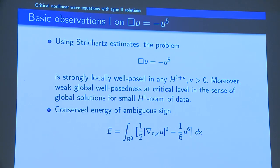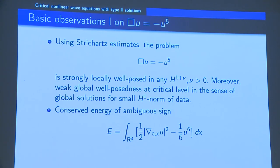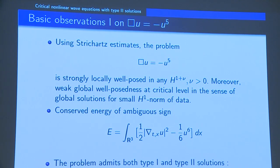As we know, there is a conserved energy which has a big minus sign, and this is responsible for the fact that you have type 1 and type 2 dynamics, because you do not a priori have control over the H^1-dot norm of the solution.